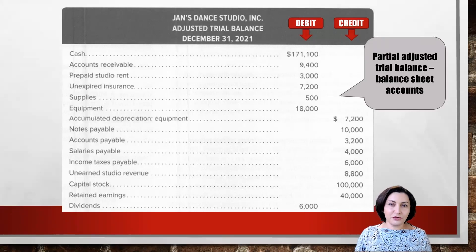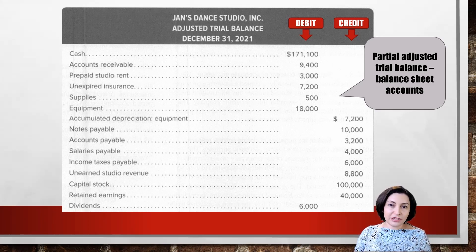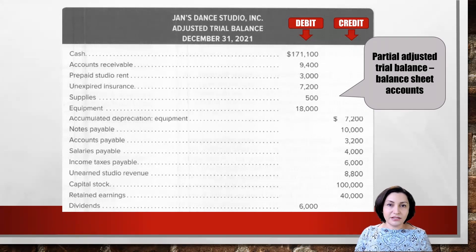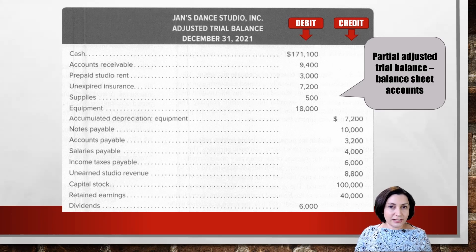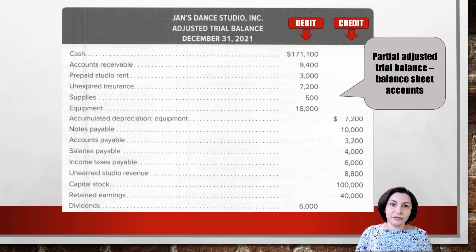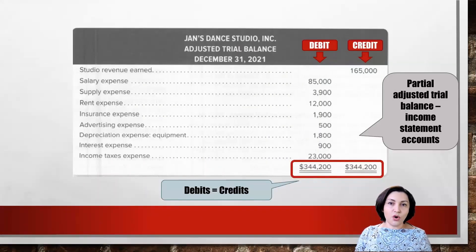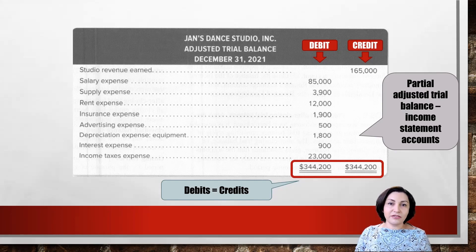This is the adjusted trial balance for Jen's Dance Studio. Note that in this exercise, we don't need to complete the first three steps because we are provided with the adjusted trial balance. All assets except accumulated depreciation and dividends are listed in the debit column because assets and dividends have a normal debit balance. The accumulated depreciation, which is a contra-asset account, all liabilities, common stock, and retained earnings are listed in the credit column because they have a normal credit balance. Revenue is listed in the credit column as it has a normal credit balance, and all expenses are listed in the debit column. Note that total debits must equal total credits.